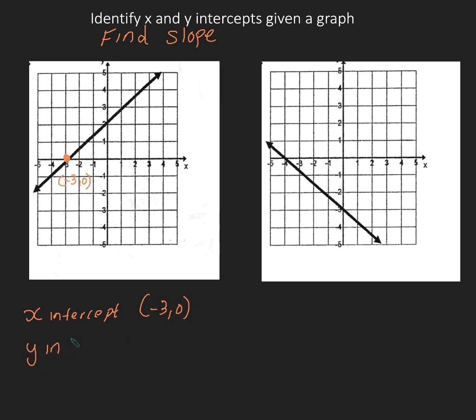We want to find the y-intercept. Where is it cutting the y-axis? Right here. You're cutting at 2. That 2 is your y. Your x is 0. So my y-intercept is 0 comma 2.